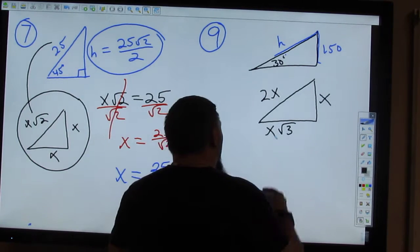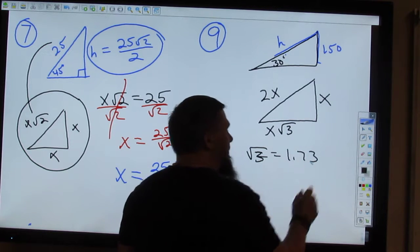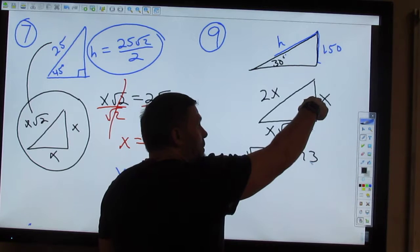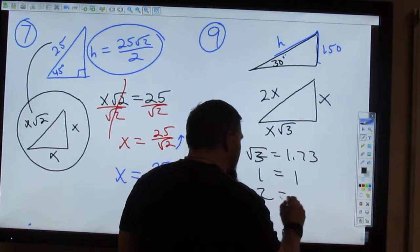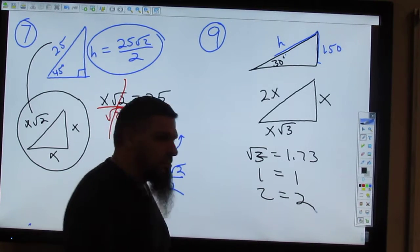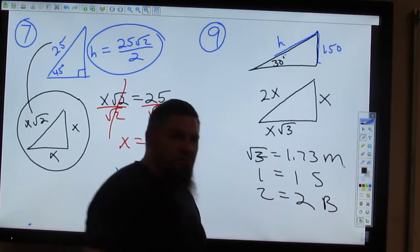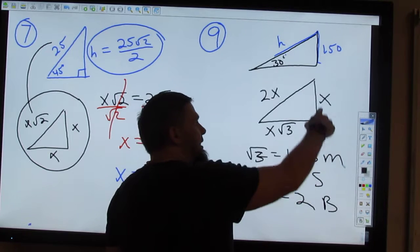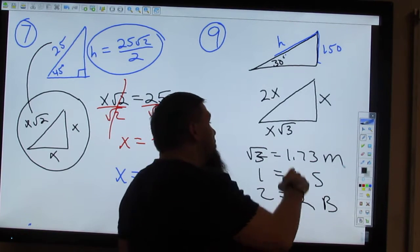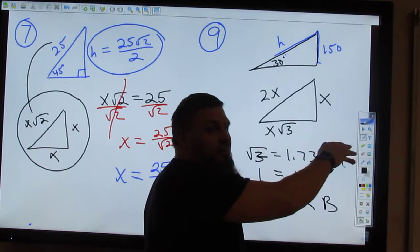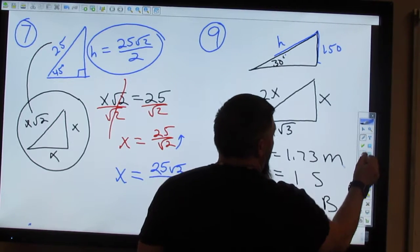So, the square root of 3 is equal to 1.73. Right? This is the 1. So, 1 is equal to 1. Right? This is 2. So, 2 is equal to 2. So, which one's the biggest? The smallest. And the medium. Right? And so, then you know that this is the small leg. X. Right? 1X. Square root of 3 X would be the medium leg. And then the longest leg would be 2X. And that's another way you can figure it out.